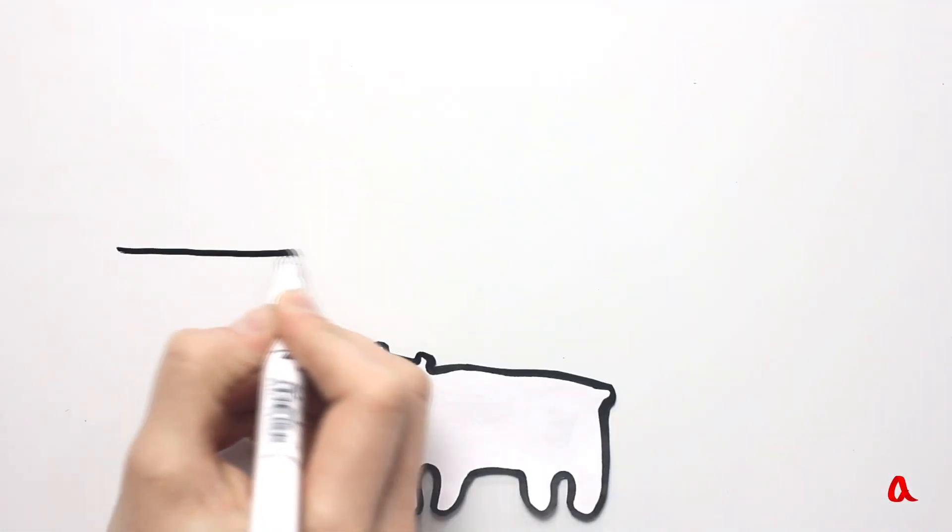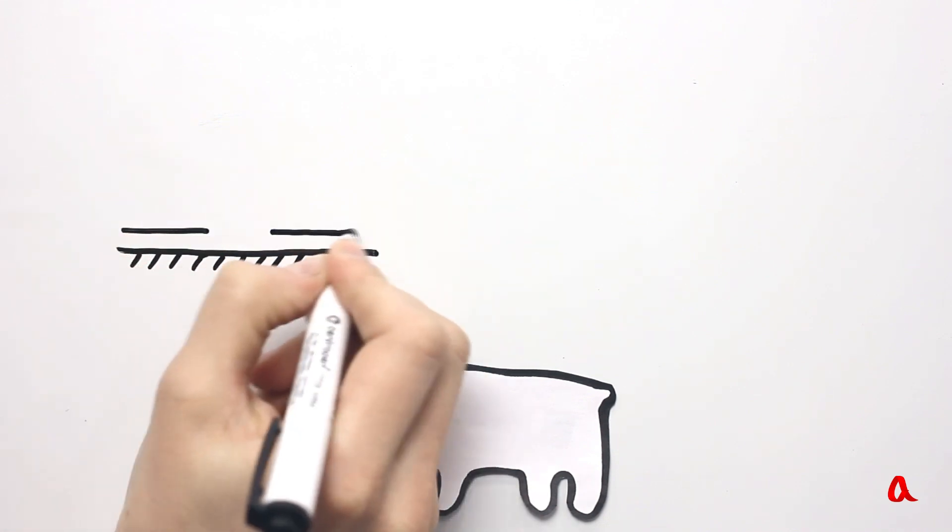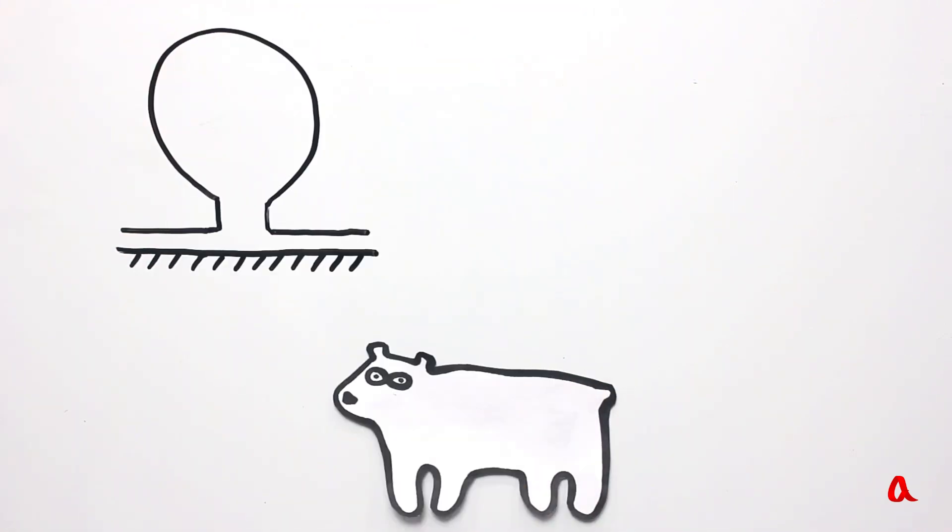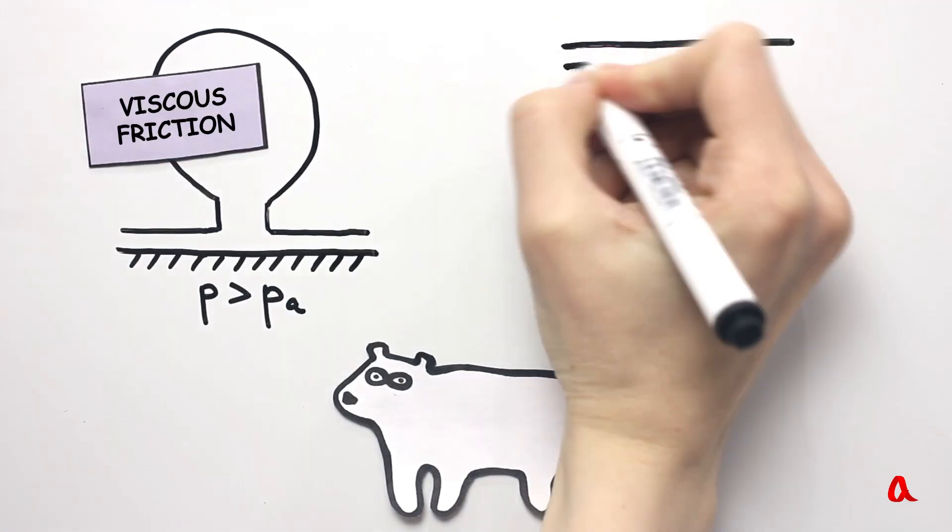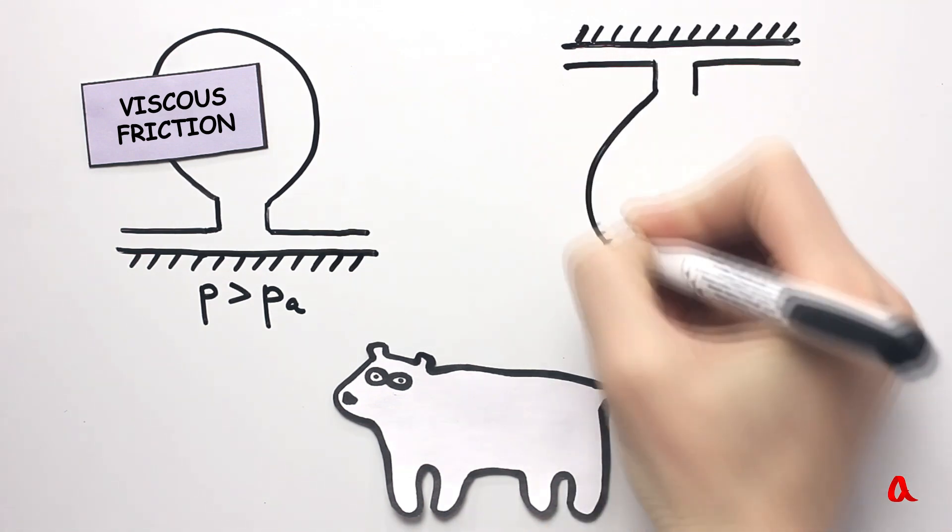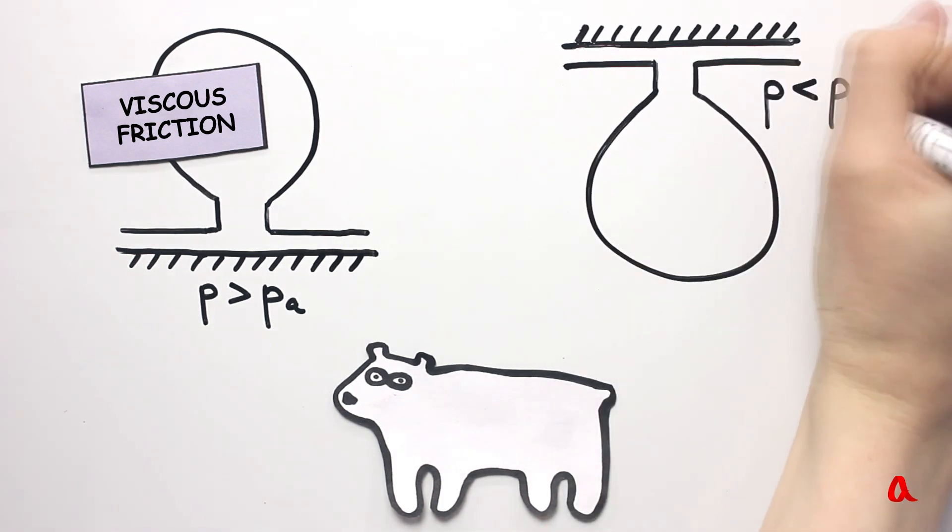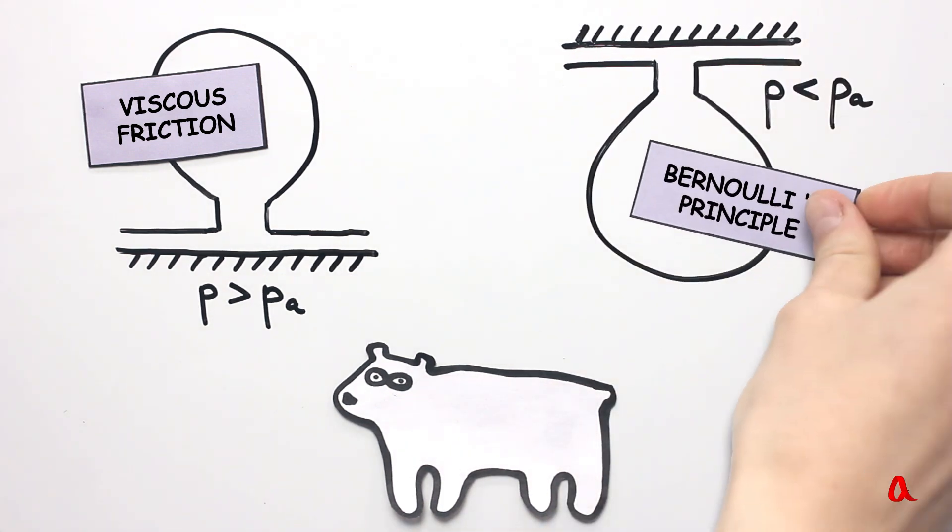Well, we have made two experiments and provided two explanations for them. When the craft glides over the table, the pressure in the slot is elevated due to viscous friction. When the craft is suspended from the ceiling, the pressure in the slot is reduced due to Bernoulli's principle effect.